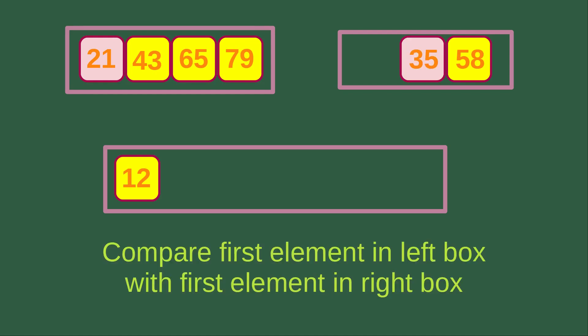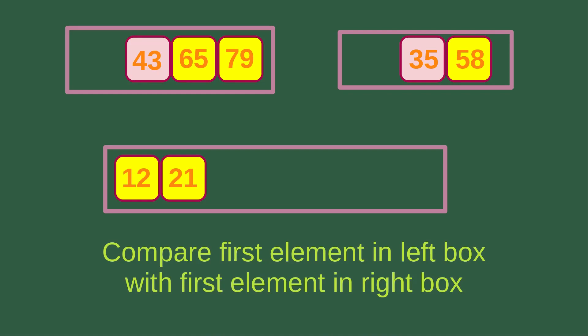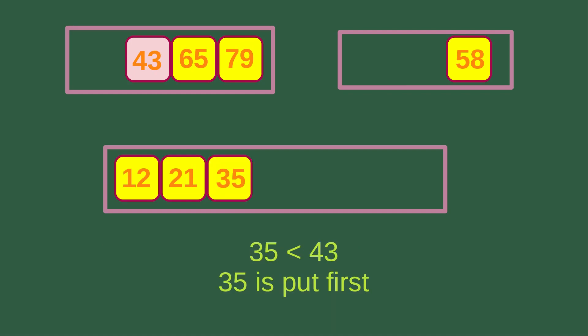Then we compare the first element in the left box with the first element in the right box. We compare 21 with 35: 21 is smaller than 35, so we put 21 into the larger merging box. Then we compare the left box, which has 43, with the right box, which has 35. Because 35 is smaller than 43, we put 35 into the larger merging box first.